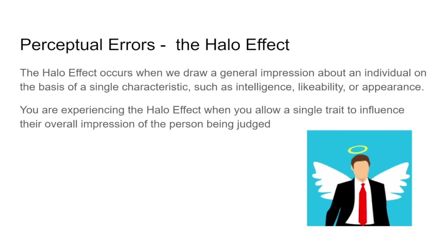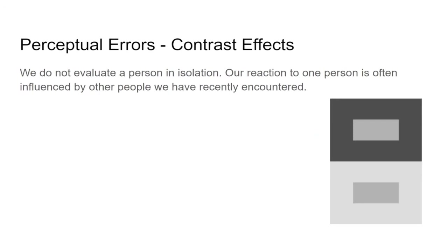There's also the halo effect — you put a halo on someone, and that person can do no wrong. Maybe they're physically attractive, or you've known them for years, or they're just so nice. The halo effect occurs when we draw a general impression about an individual on the basis of a single characteristic such as intelligence, likability, or appearance. That young girl's smile is influencing our impression of her — it creates a halo that causes a very positive effect.